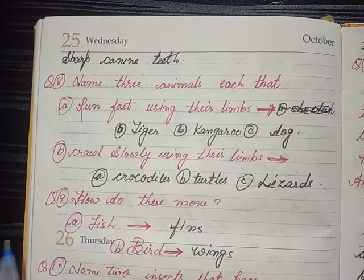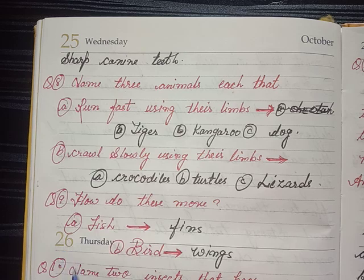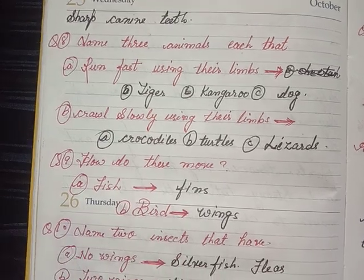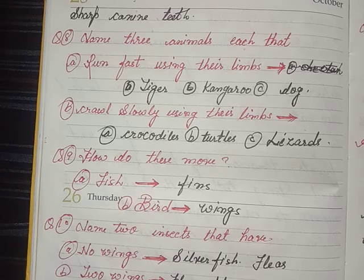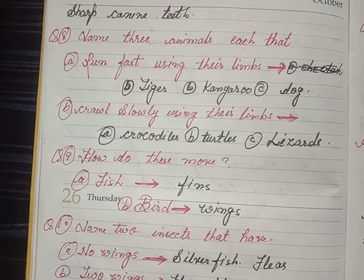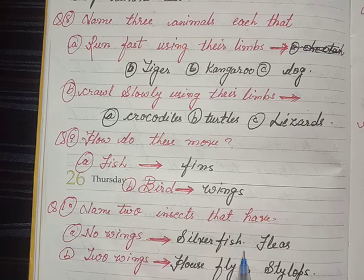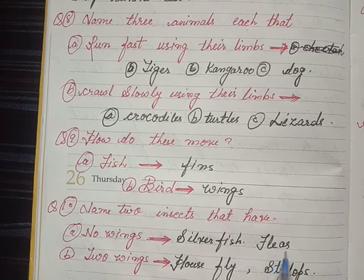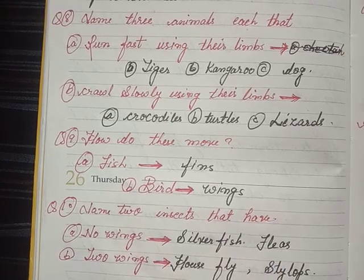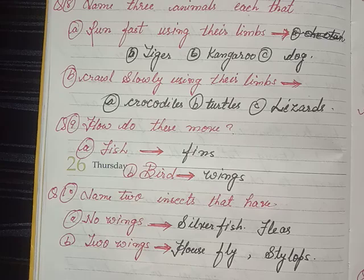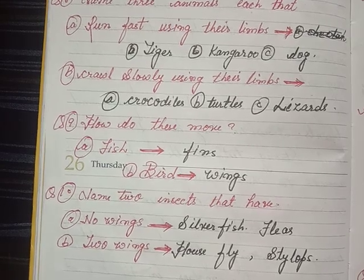Question 9 — How do these move? Fish — fins. Birds — wings. Question 10 — Name two insects that have no wings — silverfish. Name two insects with two wings — housefly, dragonfly.